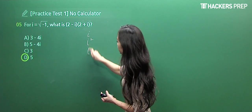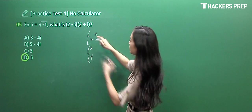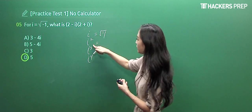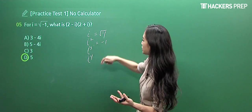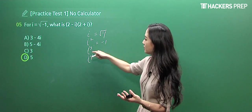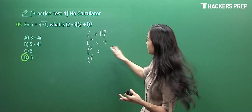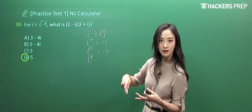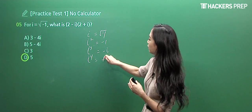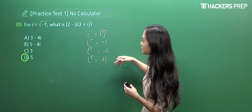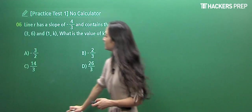By definition, i is the square root of negative one. i² is negative one. i³ is negative i, and i⁴ is positive one. It repeats this process four times.